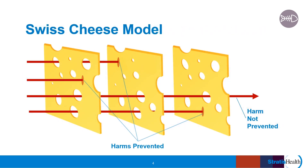James Reason, a patient safety expert, proposed the Swiss cheese model to recognize that we have generally built-in barriers or defenses to failure. However, these barriers are not perfect. There are flaws in each layer and that, if aligned, can allow an event to occur. Thinking of RCA factors in terms of these six categories helps us to remember to think broadly about what may have caused or contributed to an event.